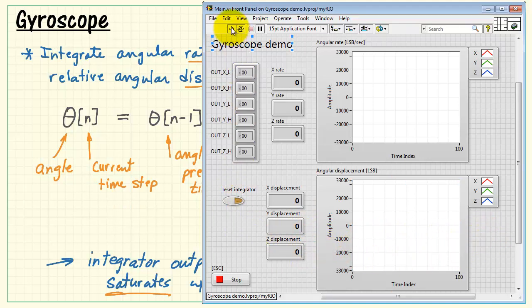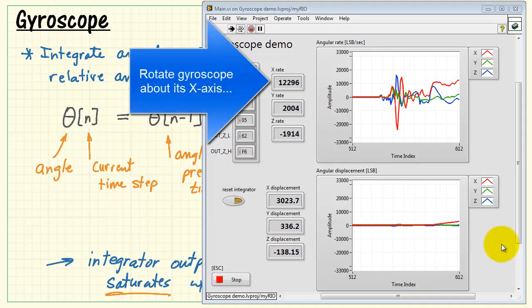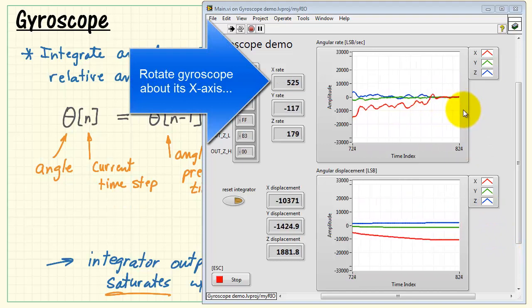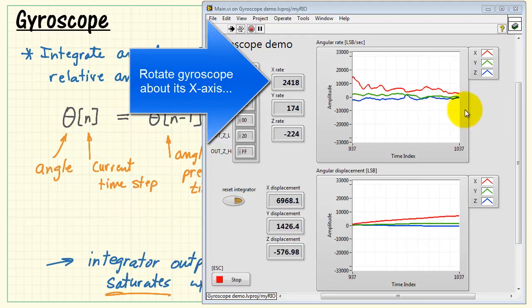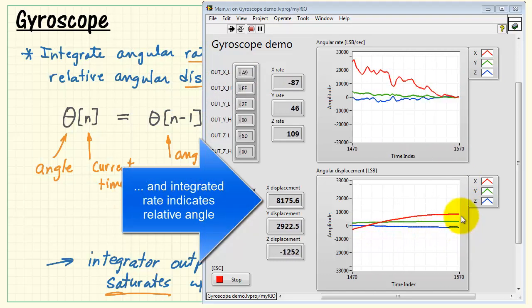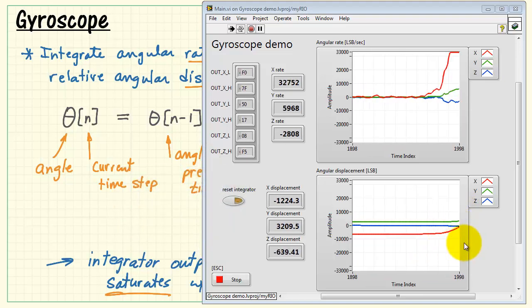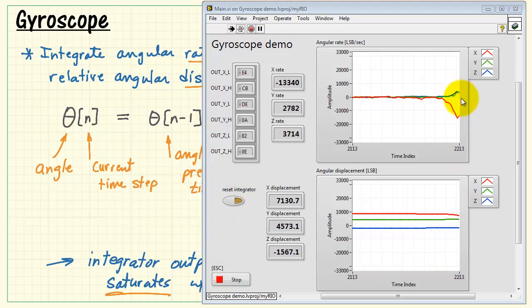So again, angular rate on top, angular displacement on the bottom. At this point, the gyro is stationary. Now I'm starting to move it. I'm rotating the gyroscope about its x-axis. If you look down here, red trace is the x-axis. You can see that now the angle is following my rotation of the PMOD gyro board.